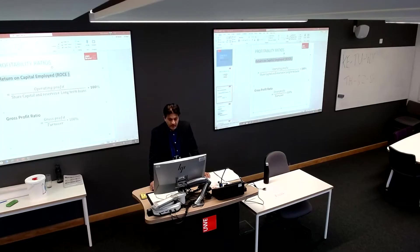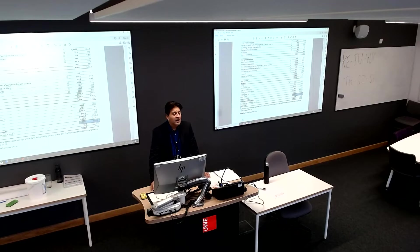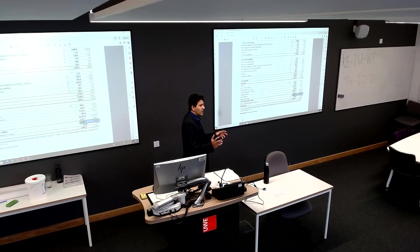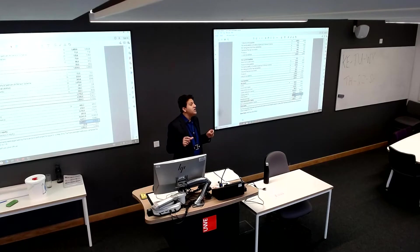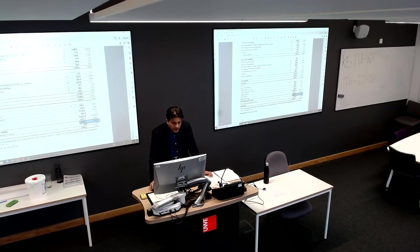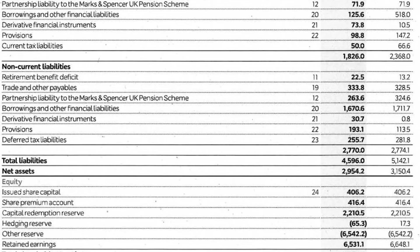The next figure is long-term loans, found in the balance sheet under non-current liabilities. Long-term means non-current. Not all non-current liabilities are loans — you need to find which one is a loan. If you go through this, you can see borrowings and other financial liabilities. That is the figure we are looking for, so we copy this onto our workings.